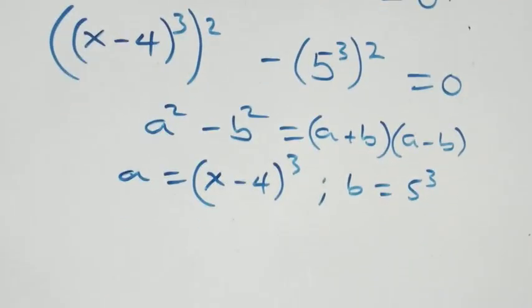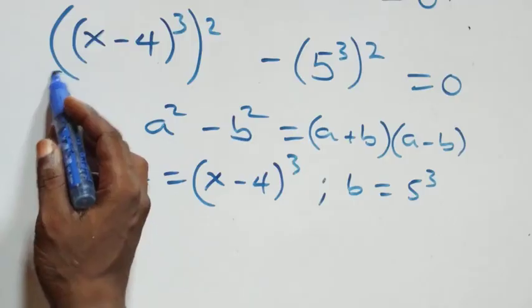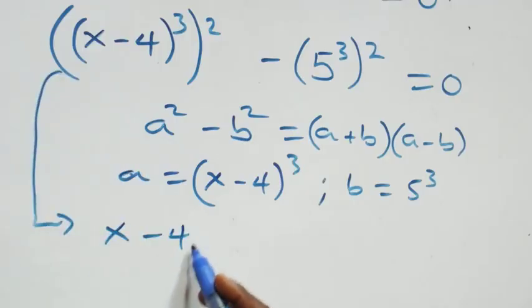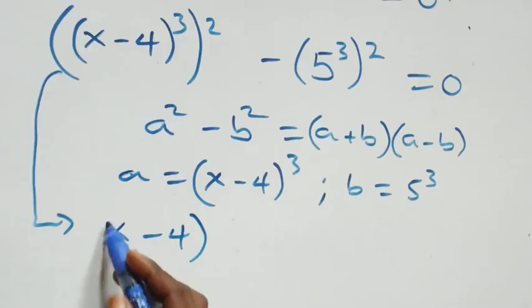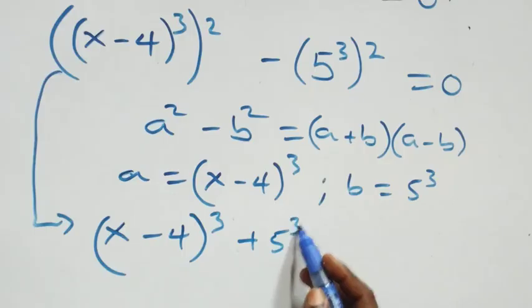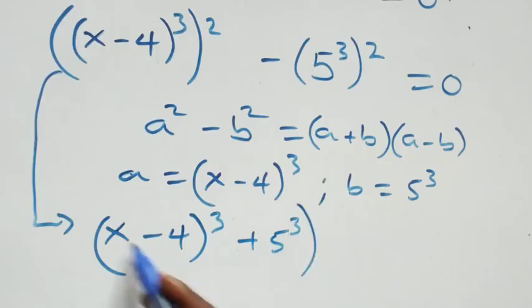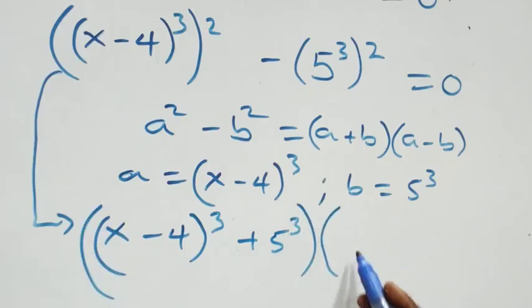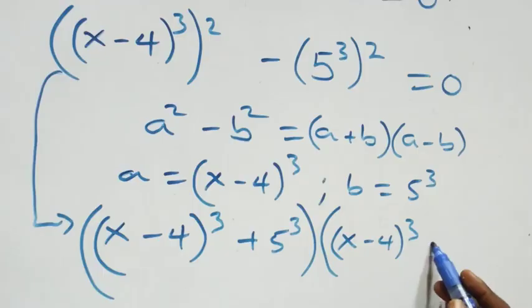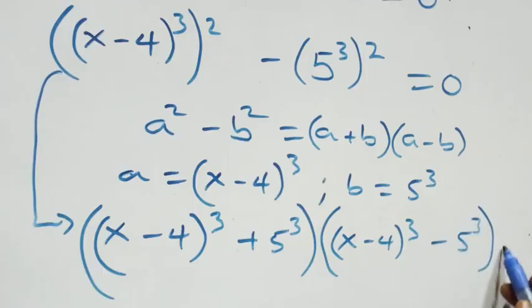Then what we have here follows this and becomes: (x minus 4) raised to the power 3 plus 5 raised to the power 3, in brackets, times (x minus 4) raised to the power 3 minus 5 raised to the power 3, in brackets, equals to 0.